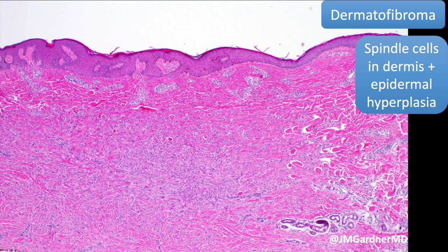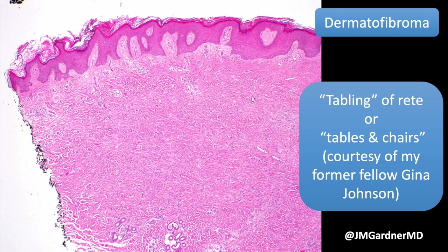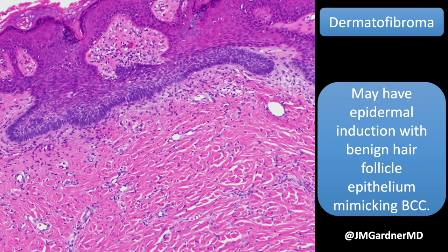The classic example shows a spindle cell proliferation in the dermis, poorly defined and trickling at the edges into adjacent collagen with collagen trapping. You'll often see epidermal hyperplasia, acanthosis, with elongated rete that are flattened at the bottom — 'tabling' as we sometimes call it. One fellow liked to say these are 'tables and chairs,' a fun way to remember it.